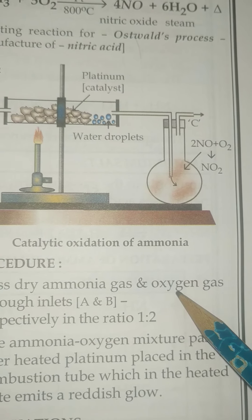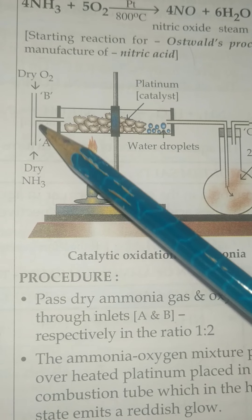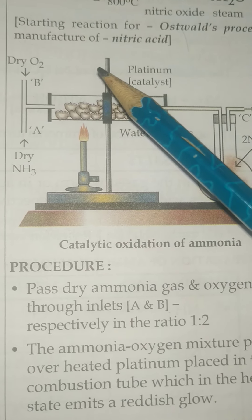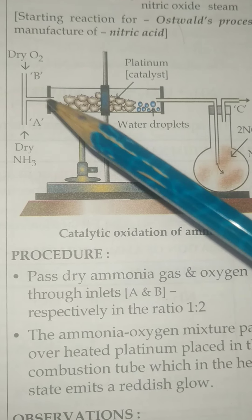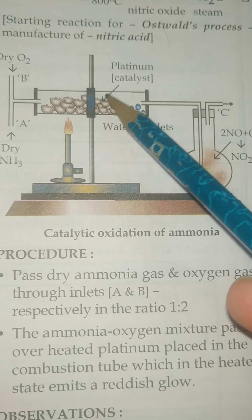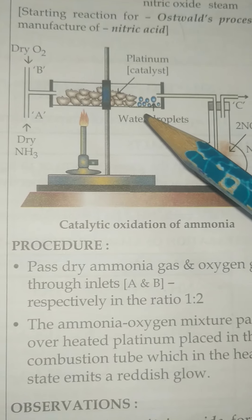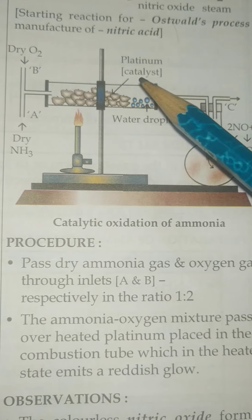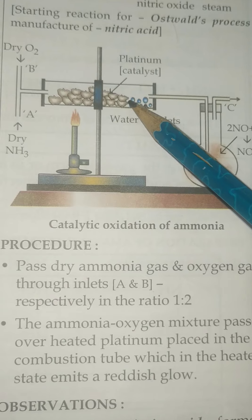You have to pass dry ammonia gas and oxygen gas through inlets A and B. From inlet A we will pass dry ammonia, and from inlet B we will pass oxygen in the ratio 1:2. This ammonia and oxygen mixture will pass over heated platinum placed in the combustion tube, which in the heated state emits a reddish glow.